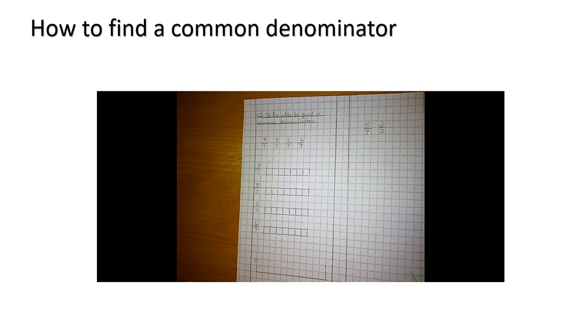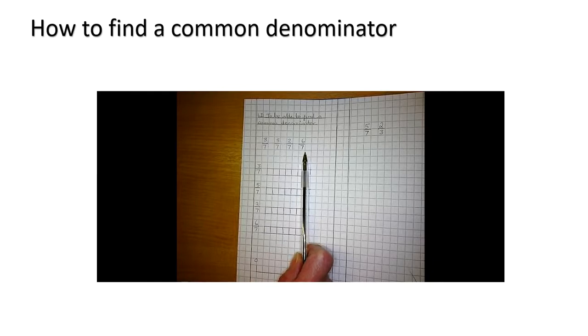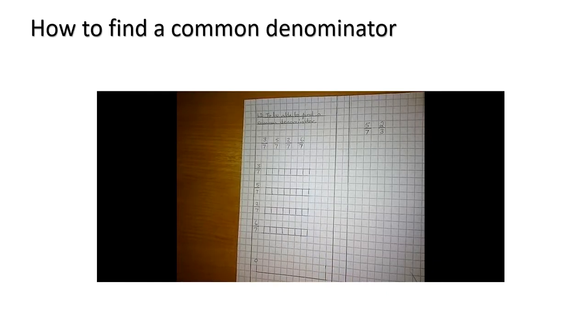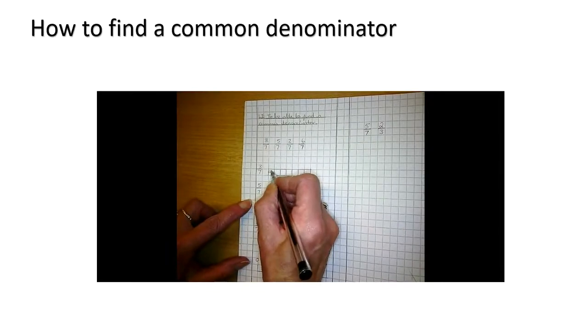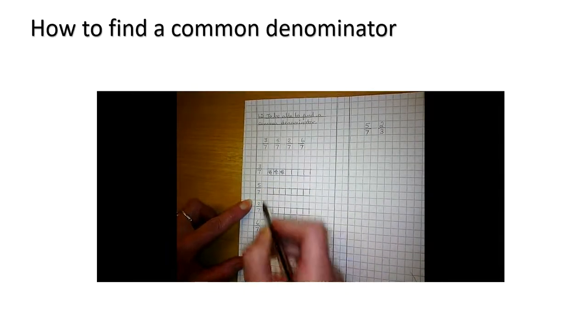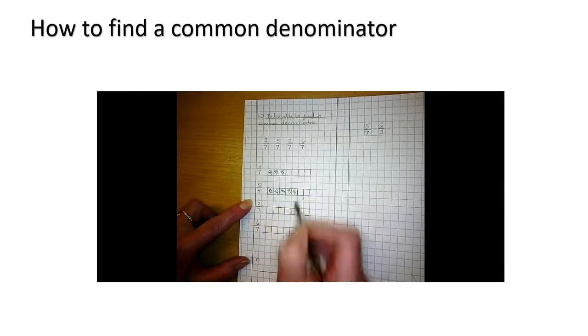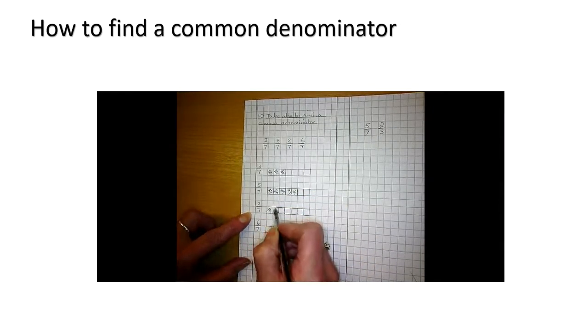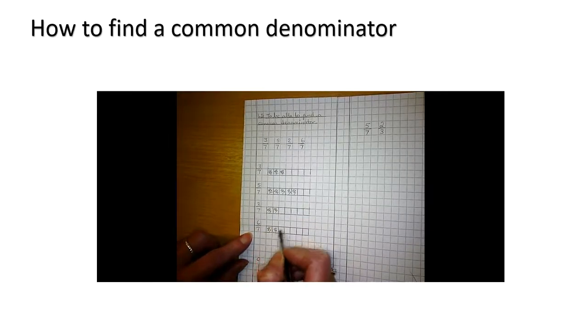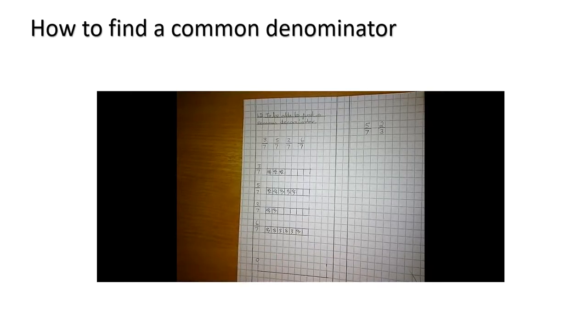So if we have a calculation where our denominators are all the same, ordering and comparing them is easy and putting them in number sequence. So I know that 3 sevenths is 3 out of 7. I know that 5 sevenths is 5 out of 7, and I know that 2 sevenths is 2 out of 7 pieces and 6 sevenths.